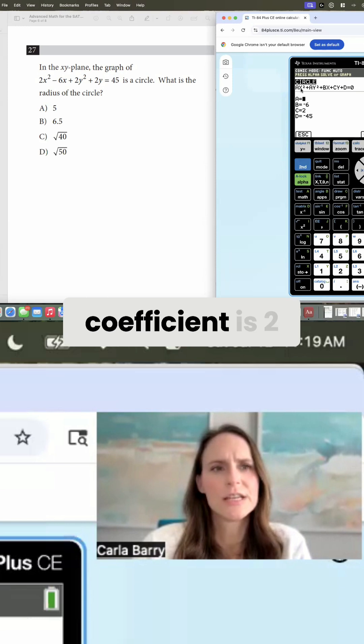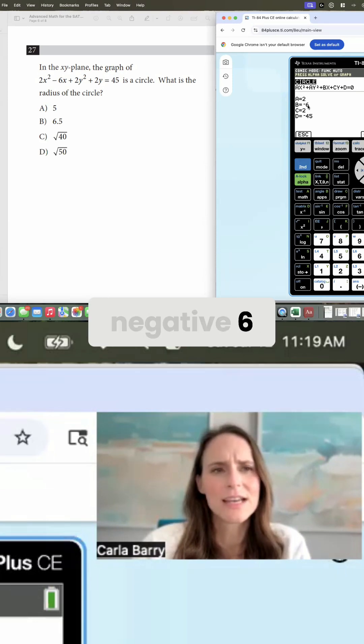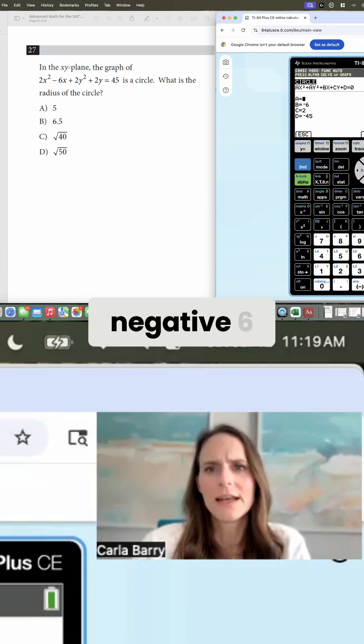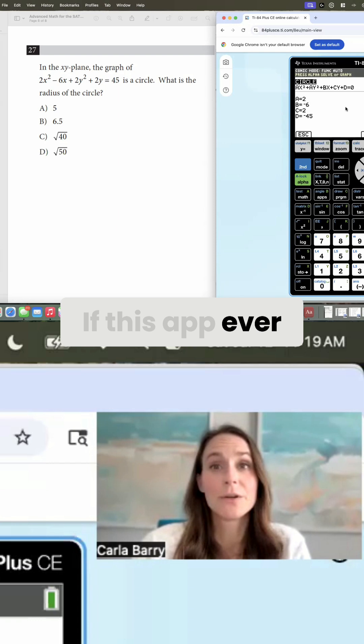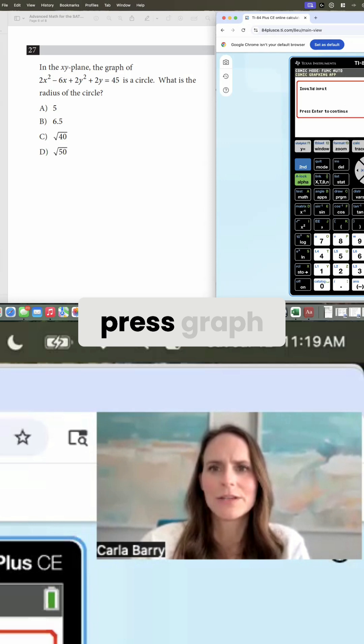So our x squared coefficient is 2. Our x coefficient is negative 6. And when you put in that negative 6, you need to use the negative next to the enter button. If this app ever malfunctions for you, I'm going to put in the wrong negative on purpose here, that minus sign. And then I'm going to press graph.